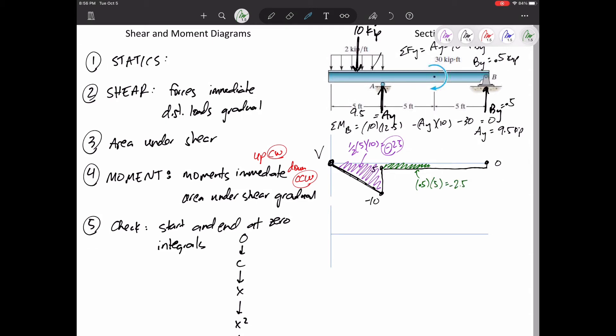That area is base times height, 2.5, and it's negative. And then I have another, I'll draw this in red, another area under the curve. So this is going to be negative. That area is also 2.5. All right. Now I think I'm ready to draw my moment diagram.